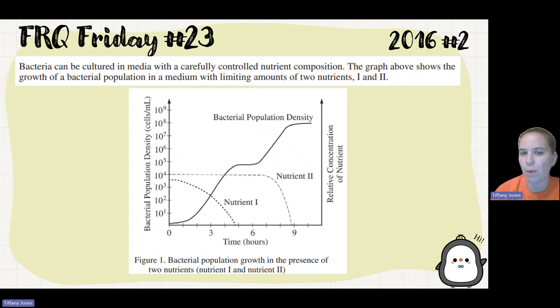Bacteria can be cultured in media with carefully controlled nutrient composition. The graph below shows the growth of bacterial population in a medium with limiting amounts of two nutrients, one and two. The figure shows our bacterial population density on the right, and then the relative concentration of our nutrients on this axis. This is what we call a double Y, so you have measurements on both sides. The nutrients are on this axis, and the population is on this axis.